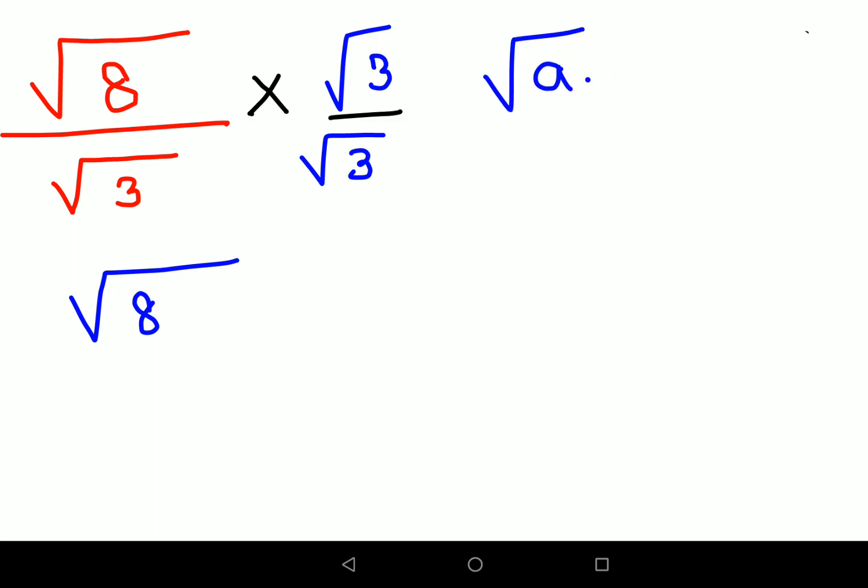In that case when you have root of a times root of b, you can directly multiply both of them and put them under one single root. So I'll write this as root of 8 times 3, and root of 3 times root of 3 just gets you a single 3.